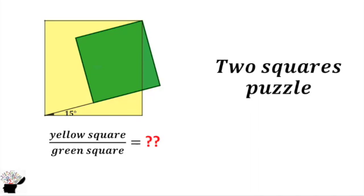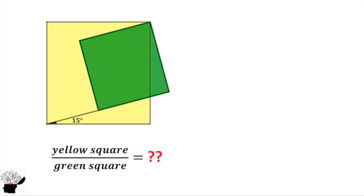So first of all we have to think about it. We have 15 degrees, right? Now when we draw a line segment from one end to the other, it divides the square into two equal parts. So the angle is 45 degrees.